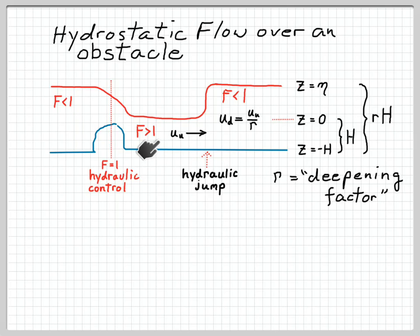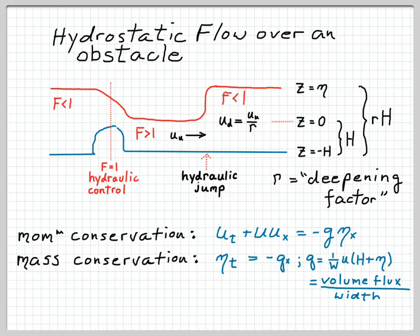Upstream of the jump, the current has a velocity u sub u for u upstream, and downstream of the jump, the current velocity is u sub d for u downstream. Mass continuity requires that this be equal to u upstream over r, so that the velocity times the depth is always the same.